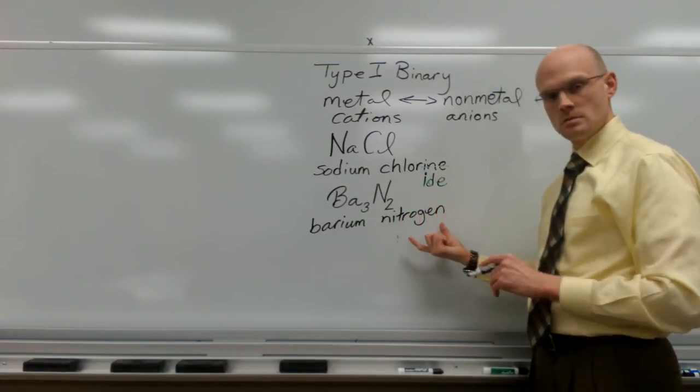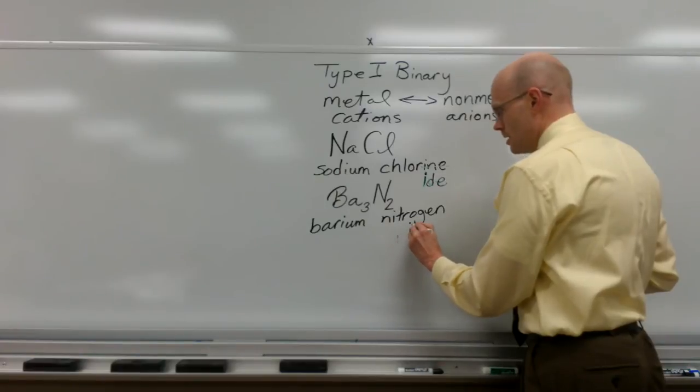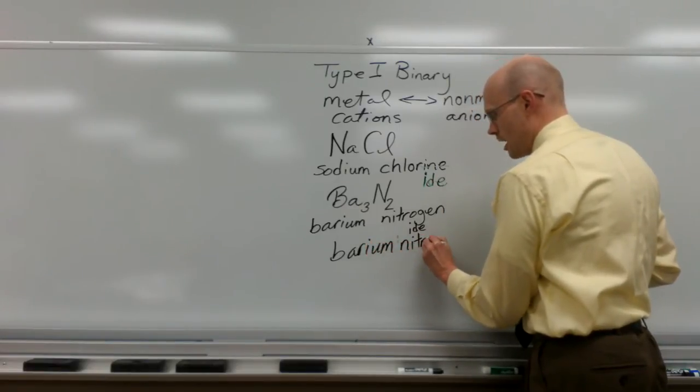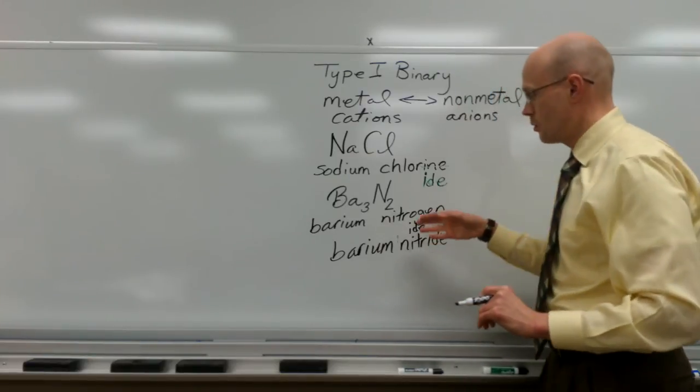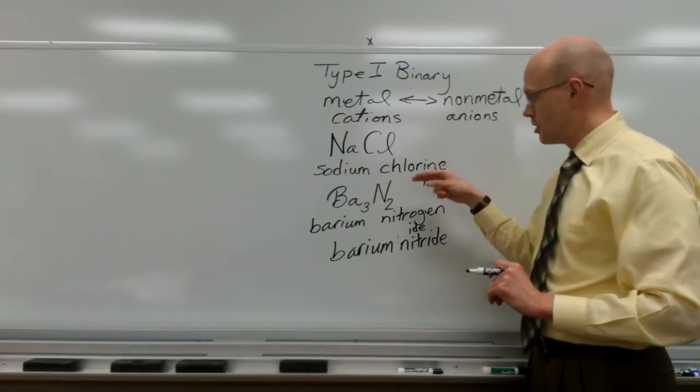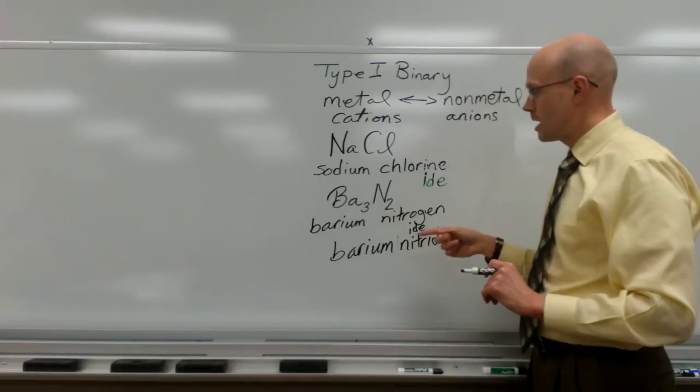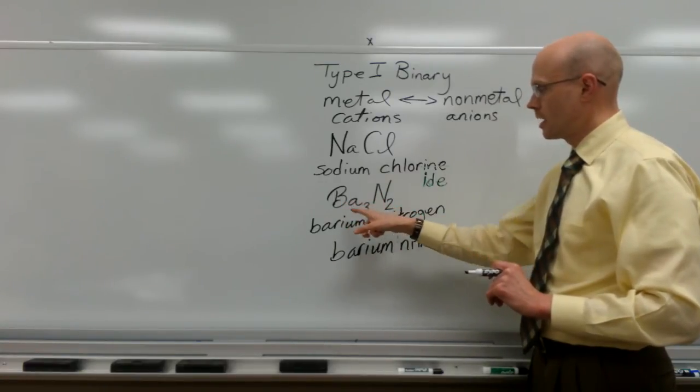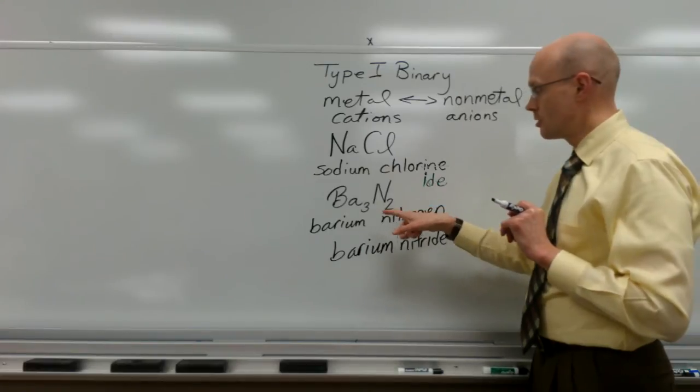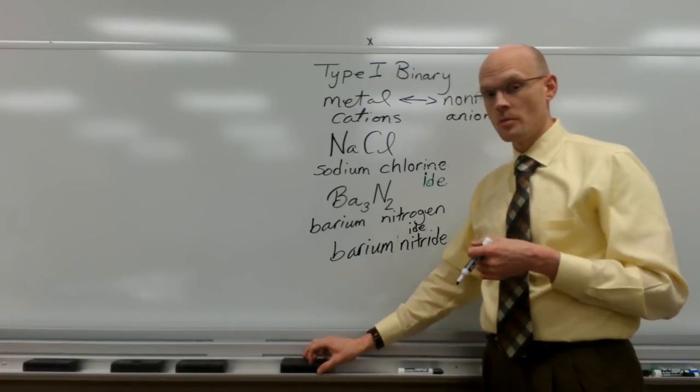We change the last syllable. Nitrogen becomes nitride. We add the '-ide'. So we have barium nitride. Notice that we do not add any prefixes such as di or tri or tetra. There are no numerical prefixes added to these type 1 binary compounds that are made of a metal and a nonmetal. A cation with only one particular charge all of the time. And an anion. There are no numerical prefixes added to this. Like we would see with carbon dioxide or carbon monoxide.